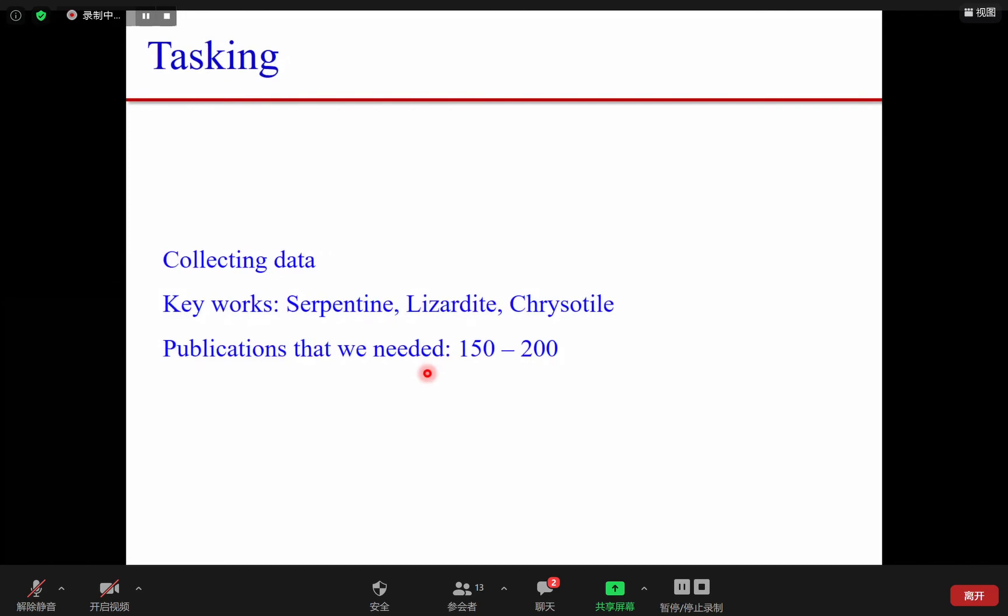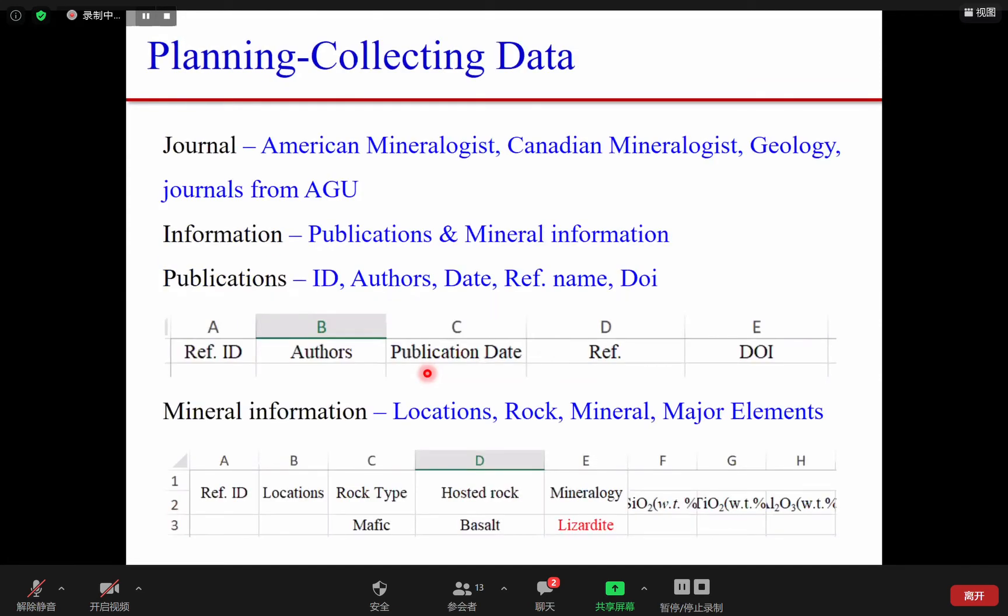Right now, we are going to collect data. The keywords we are going to use are serpent, lizardite, and chrysotile. We would suggest to collect roughly 150 to 200 publications. The journals we are going to focus on are American Mineralogist, Canadian Mineralogist, Geology, and journals published by AGU.